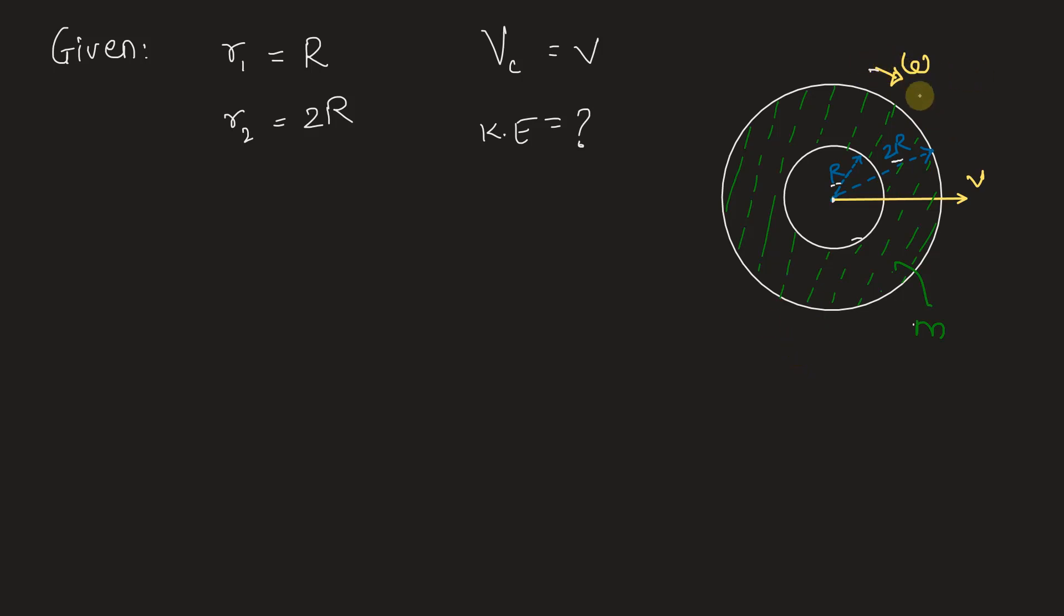If the disc rotates clockwise, center is going to move in the forward direction. It is moving on a frictionless surface where this point of contact can be given as O.